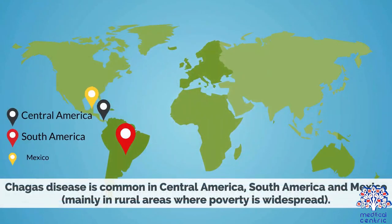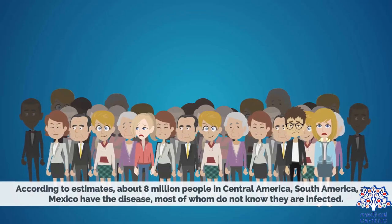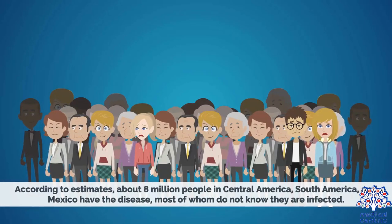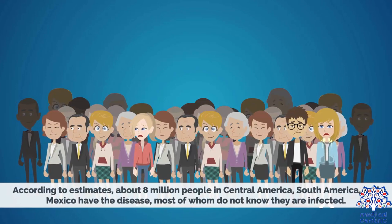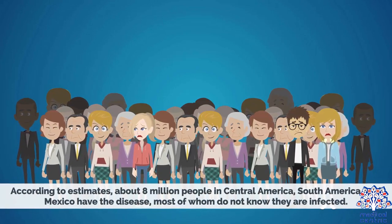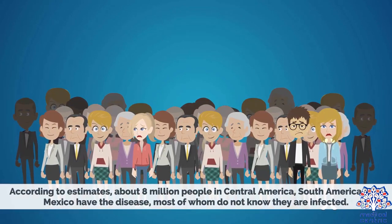Chagas disease is common in Central America, South America, and Mexico, mainly in rural areas where poverty is widespread. According to estimates, about 8 million people in Central America, South America, and Mexico have the disease.